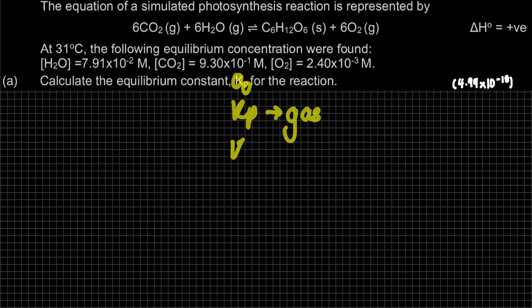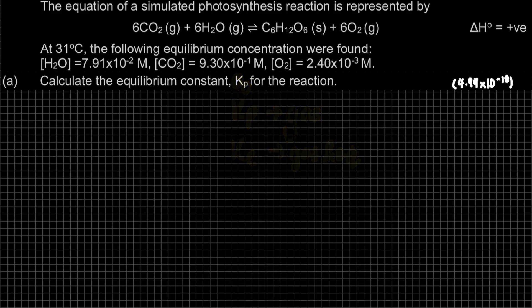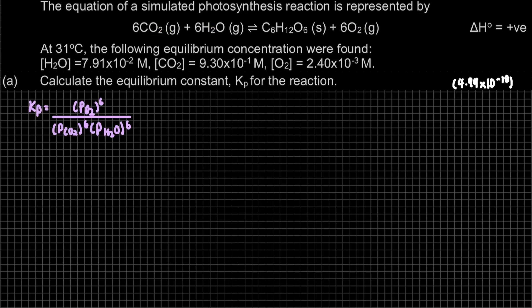If we have Kc, that is concentration, it will include gas and aqueous species. For Kp, we need only gases. So here, our gas species give us O₂ divided by H₂O and CO₂ — this is our Kp expression.